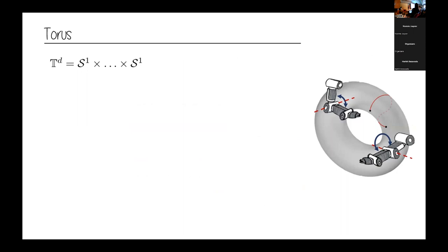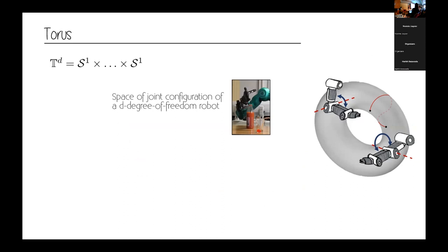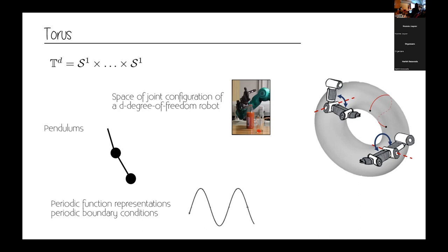The second example is the torus. Broadly speaking, we can think of the torus as a manifold used to represent the space of joint configurations for a robot — if the robot has joint limits. The best example is probably the pendulum or double pendulum. If we want to represent the configuration space of a pendulum, we can use the torus, which is basically just a Cartesian product of circles — S1, spheres of dimension one. The behavior can be identified with periodic functions.